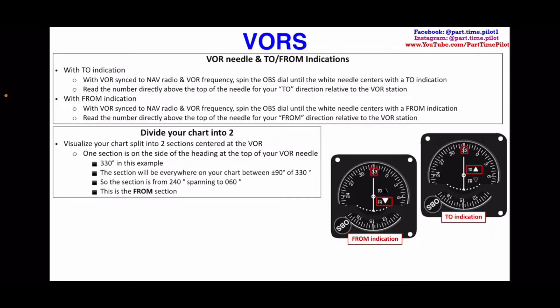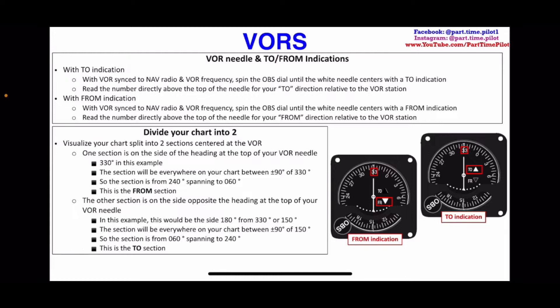Divide your chart into two sections centered at the VOR. One section is on the side of the heading at the top of your VOR needle — 330 in this example. That section spans from 240 to 060, which is plus or minus 90 degrees of 330, and that is the FROM section. The other section is on the opposite side — 180 degrees from 330, which is 150. That TO section spans from 060 to 240.